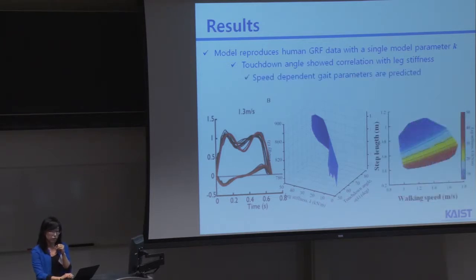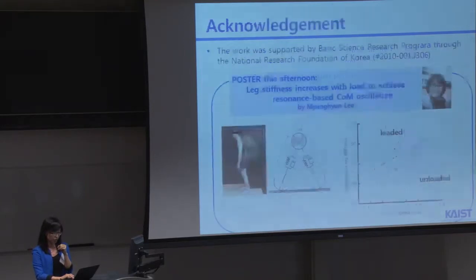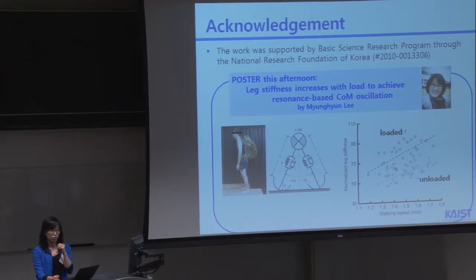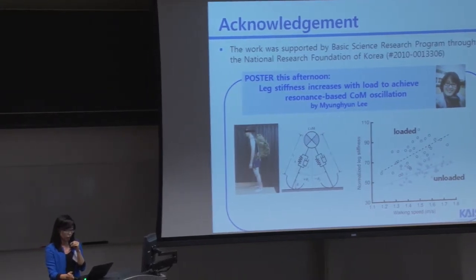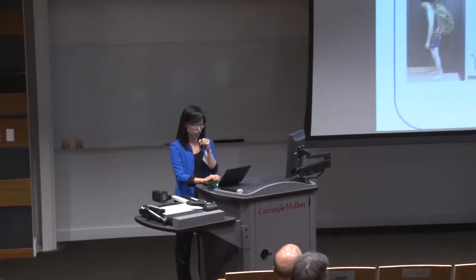Finally, our feasible solution set shows a speed dependent K parameter changes, such as for the step length, our feasible solution set, when you have a fixed leg stiffness, when you walk faster, your step length increased, which is consistent to the experimental data observed. If you want more about the details of the model, please step by the poster. I'd like to acknowledge our funding source, NRF of Korea, and I have another poster this afternoon about the leg stiffness increases with the load to match the resonant-based center of mass oscillation.